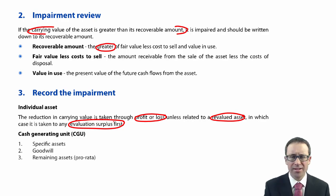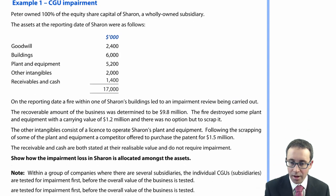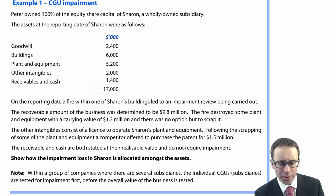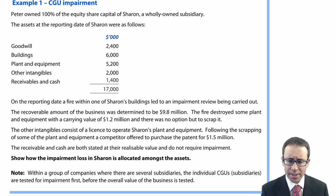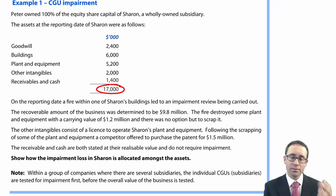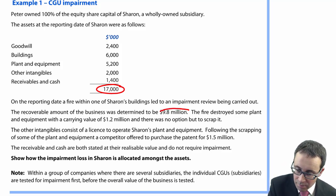So that's the background theory — the stuff you've seen previously. Now let's work through the example. It asks us to show how the impairment loss in Sharon is allocated amongst the assets. Peter owned 100% of the equity share capital of Sharon, a wholly owned subsidiary. The assets at the reporting date of Sharon include goodwill, buildings, plant and equipment, other intangibles, receivables, and cash, totalling 17 million. A fire within one of Sharon's buildings led to an impairment review, and the recoverable amount of the business was deemed to be $9.8 million.